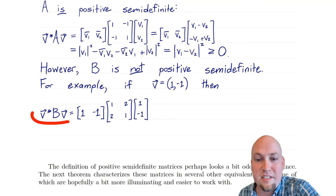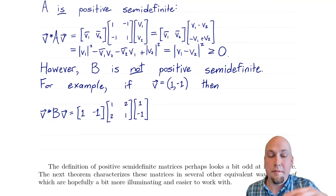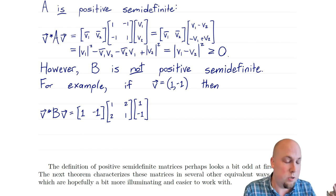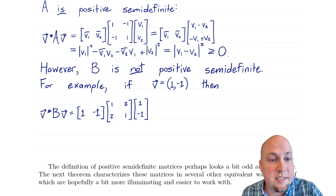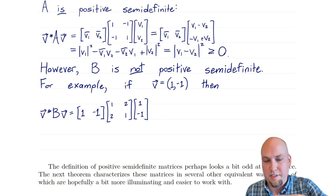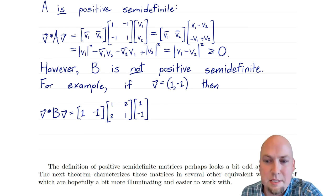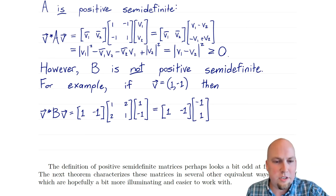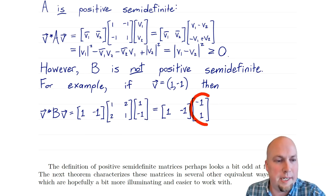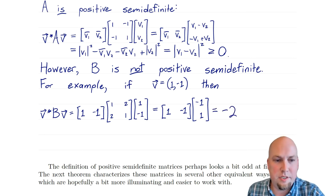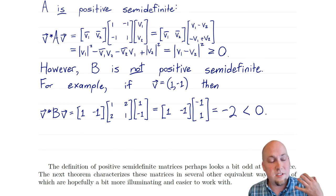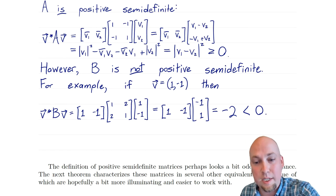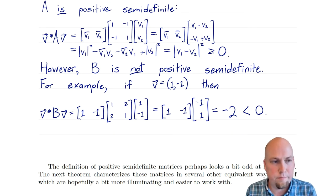We're computing V*BV for a particular vector V that I cleverly chose ahead of time. There are certainly choices of V that make this quantity bigger than zero, but we just need one counterexample — one example that gives something smaller than zero. Doing the matrix multiplications: the right product gives the column vector (-1, 1), then the next product gives minus two. Since minus two is less than zero, B is not positive semi-definite because V*BV is not always bigger than or equal to zero.